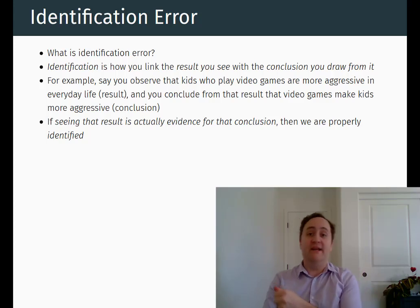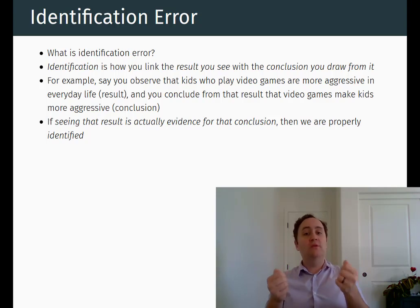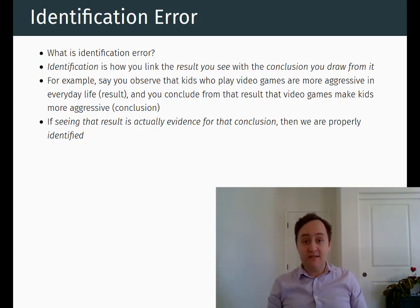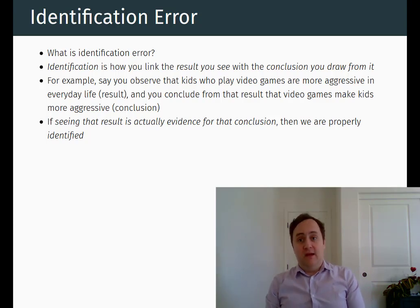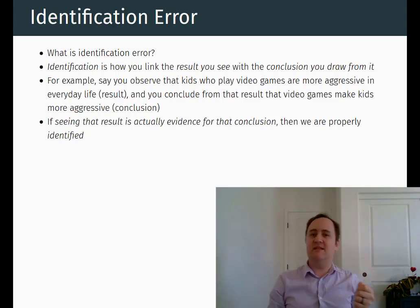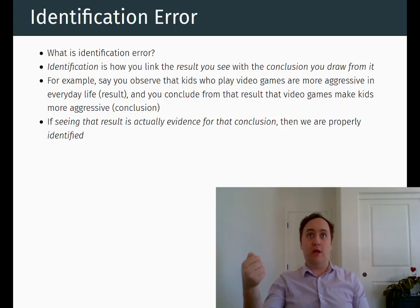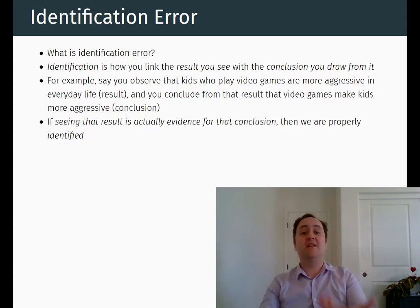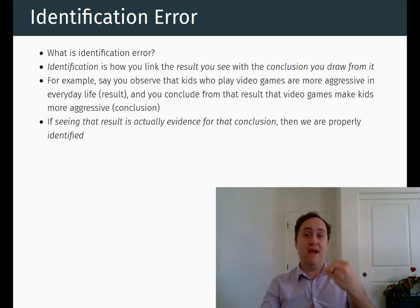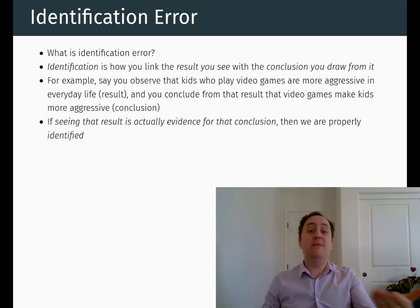So, does this variable cause that variable? Going back to the coin flip example: not only should the correlation in the population be zero between them, but also one of them does not cause the other. If we were to get a positive relationship and we said it's because this coin flip causes this coin flip to change its value — when this one gets a heads, that makes this one want to do a heads too — that would be identification error. If the result that we get in our data, even if it's a correct data result, leads us to make an incorrect theoretical conclusion, then that would be identification error.